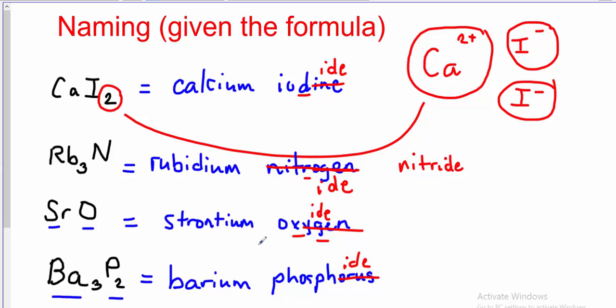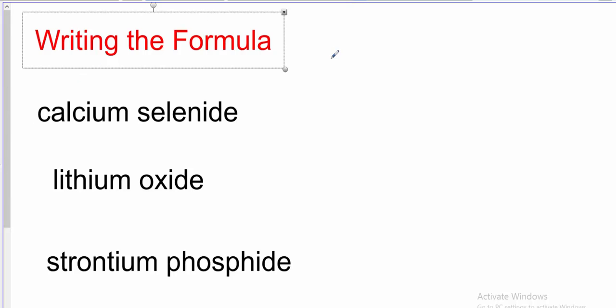Now let's go backwards — instead of naming a compound, we're going to write the formula given the name. This is actually really simple. We're given the name calcium selenide. We go back to the periodic table, and this time we have to find out the charge on each of these elements — their symbol and their charge — so that we can write the formula correctly. It's a mistake to just write the symbols without thinking about how they combine.